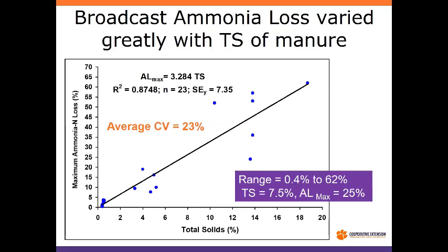Combining all the wind-tunnel data for broadcast of swine manure, we go from fractional percent all the way up to roughly 18% ammonia loss as a fraction of TAN, and total ammonia loss ranging from very little all the way up to 62%. So there are huge differences — if we're using one number in our extension recommendations, we're off a lot of the time. If I plug in 7.5% total solids into the regression equation, I get an AL max of 25% for broadcast.